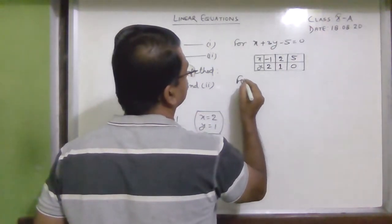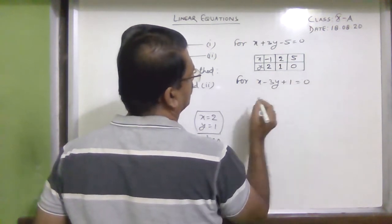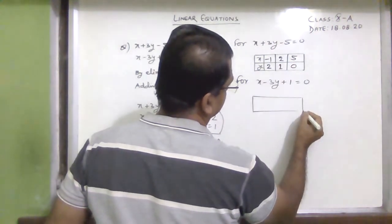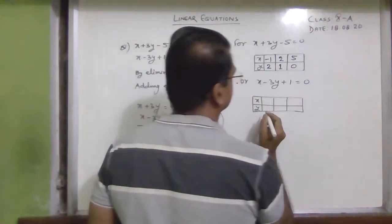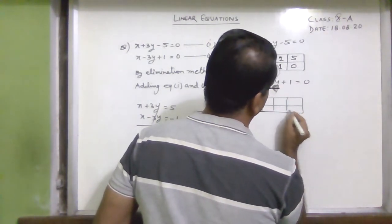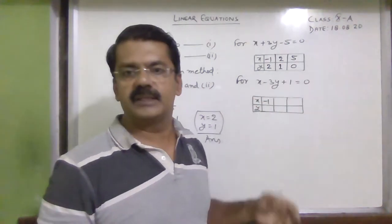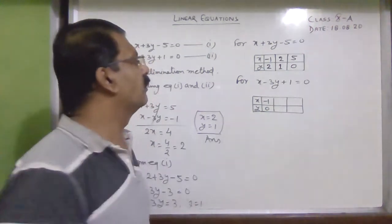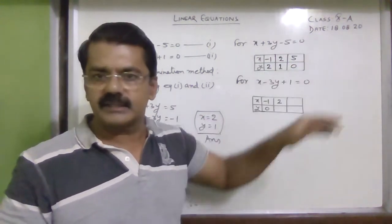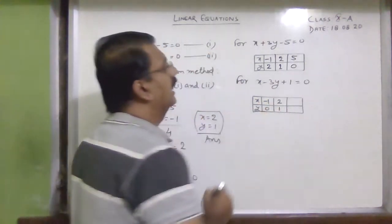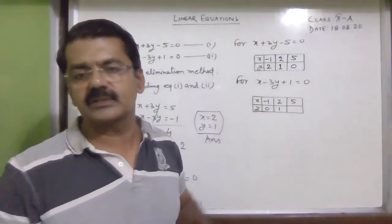For the second equation, x − 3y + 1 = 0, we draw another table. When x = −1: −1 + 1 = 0, so y = 0, giving (−1, 0). When x = 2: 2 + 1 = 3, so −3y = −3, y = 1, giving (2, 1). When x = 5: 5 + 1 = 6, so 3y = 6, y = 2, giving (5, 2).